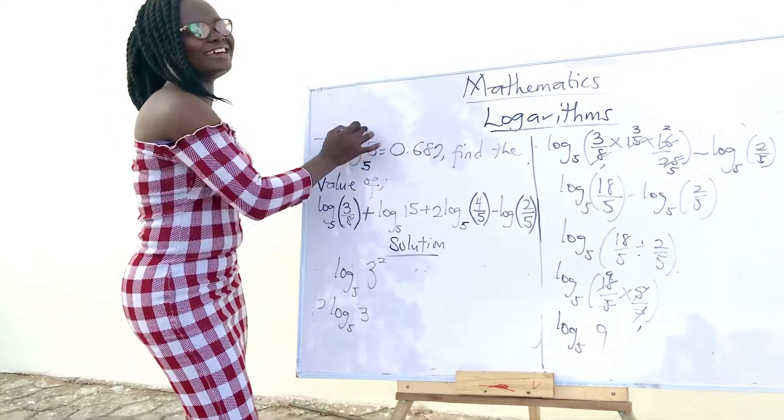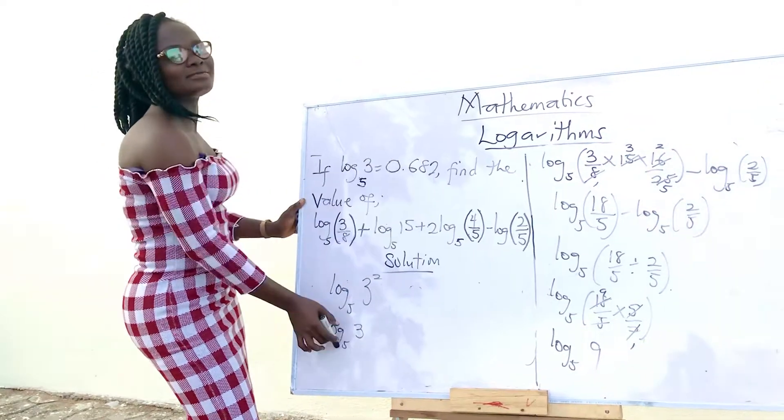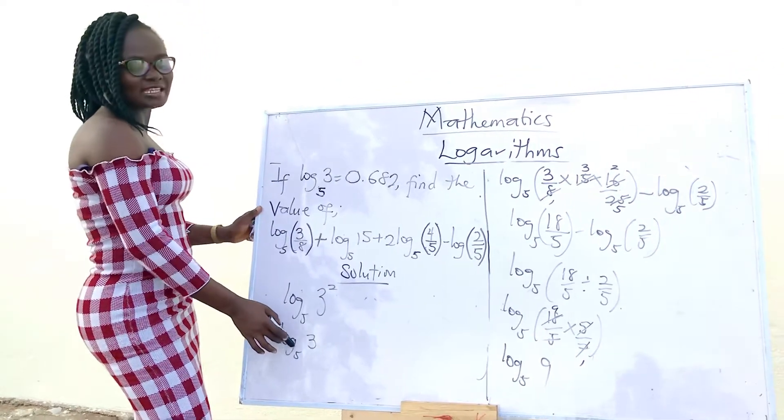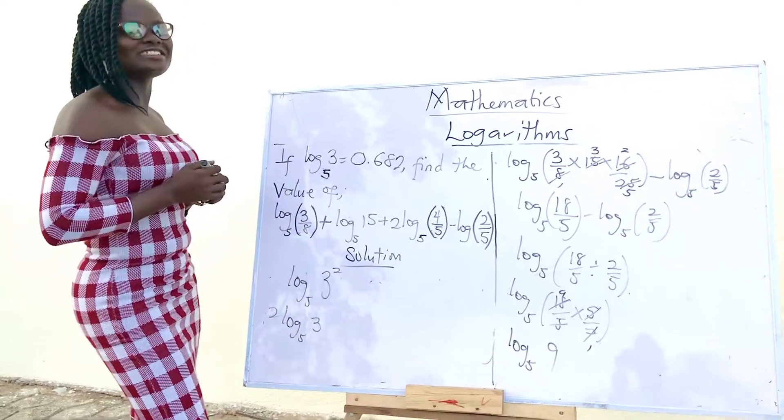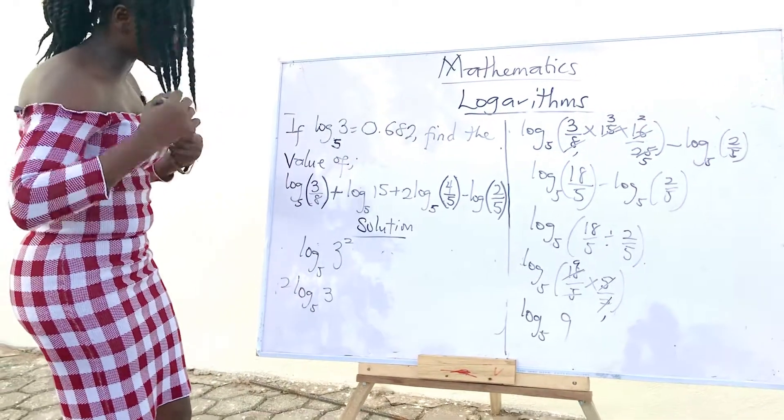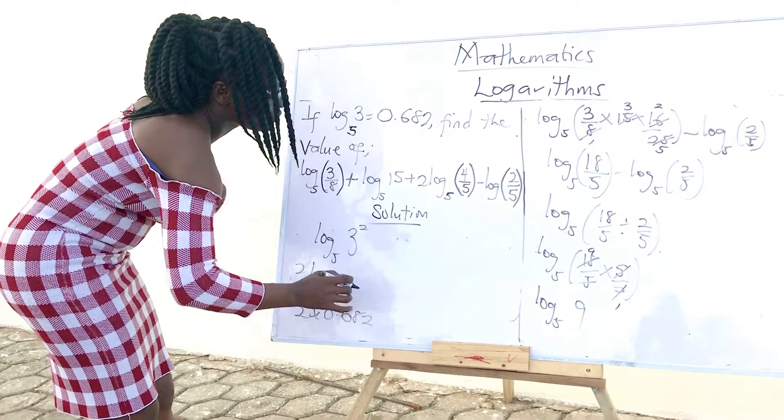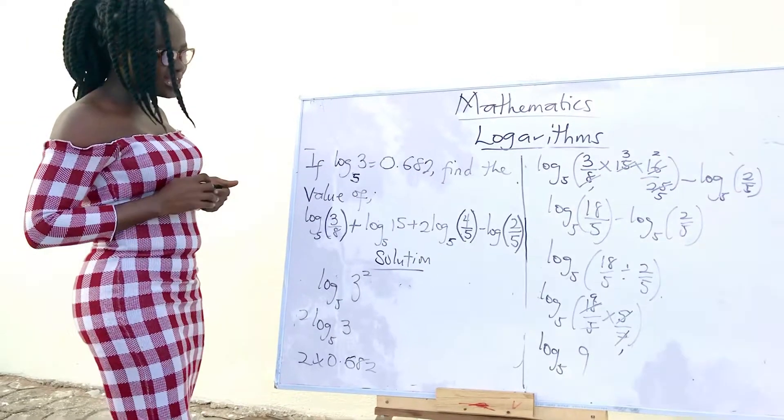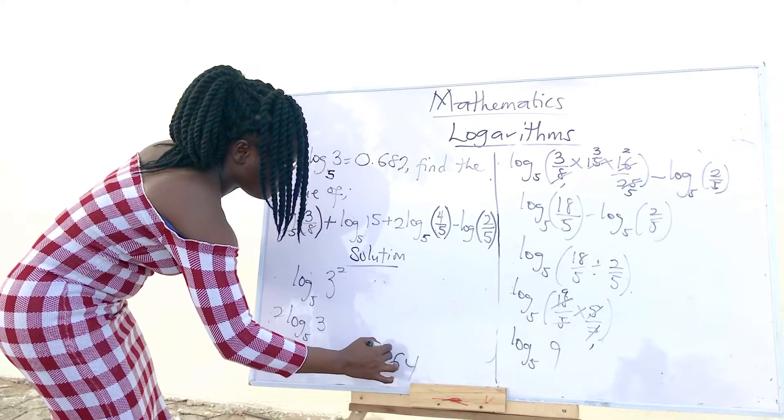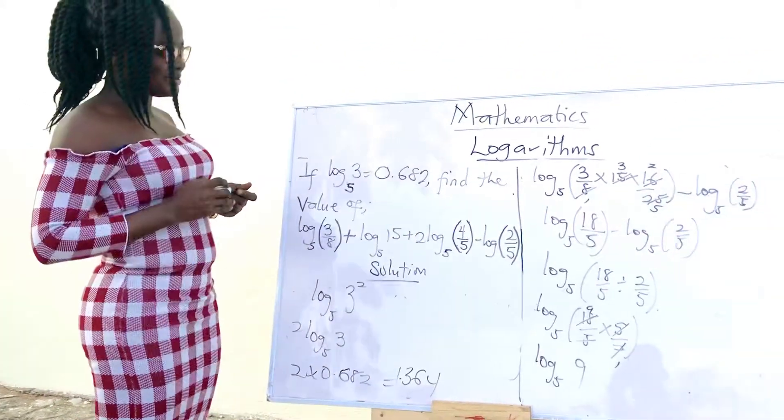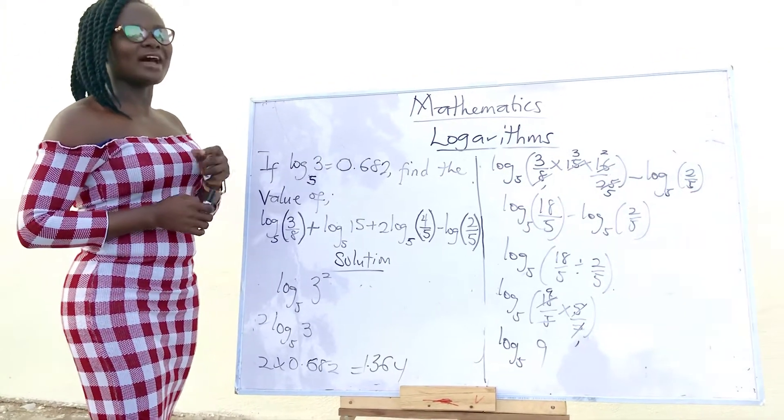Are we seeing it over here? Excellent. So, in this case, we simply do a substitution. Wherever we see log 3 base 5, we are fixing 0.682. So, let's do it together. What is 2 times 0.682? We are going to get 1.364. And that is our final answer.